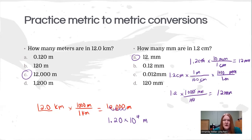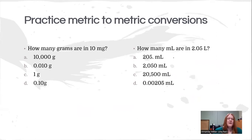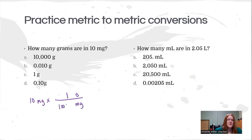Whether you remember the centimeter-to-meter and millimeter-to-meter relationships, or whether you remember how many millimeters are in a centimeter, either strategy is fine. This one is about milligrams — we have 10 milligrams and we want to get to grams. I'll put grams on top of my fraction and milligrams on the bottom. Grams is the bigger unit, so there's one of those, and there are 1000 milligrams in one gram.